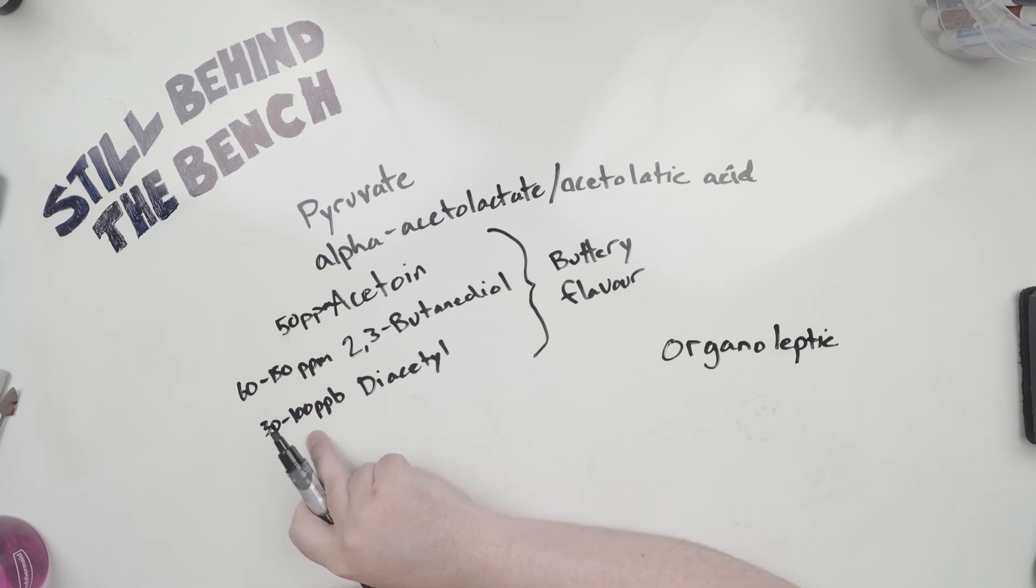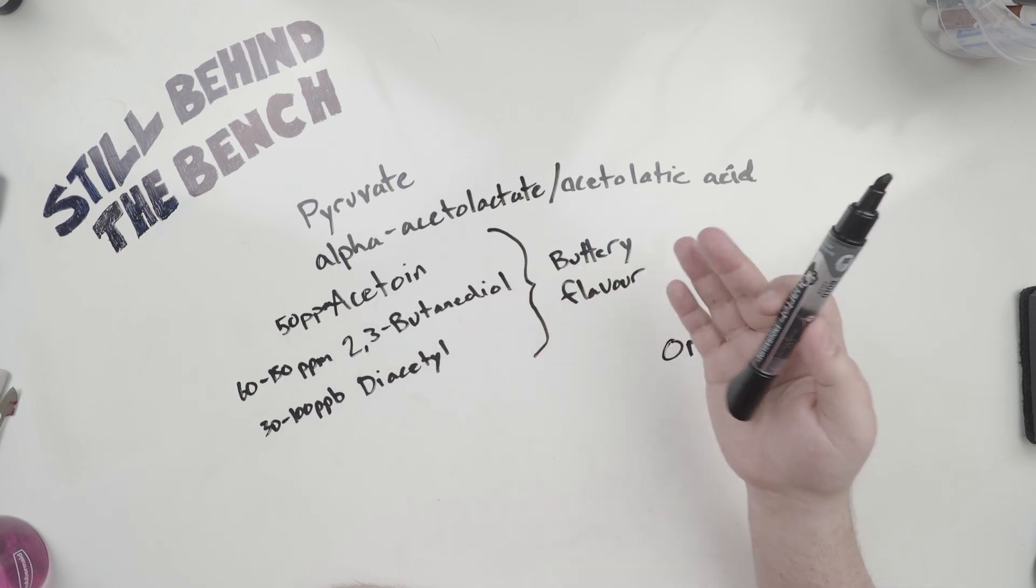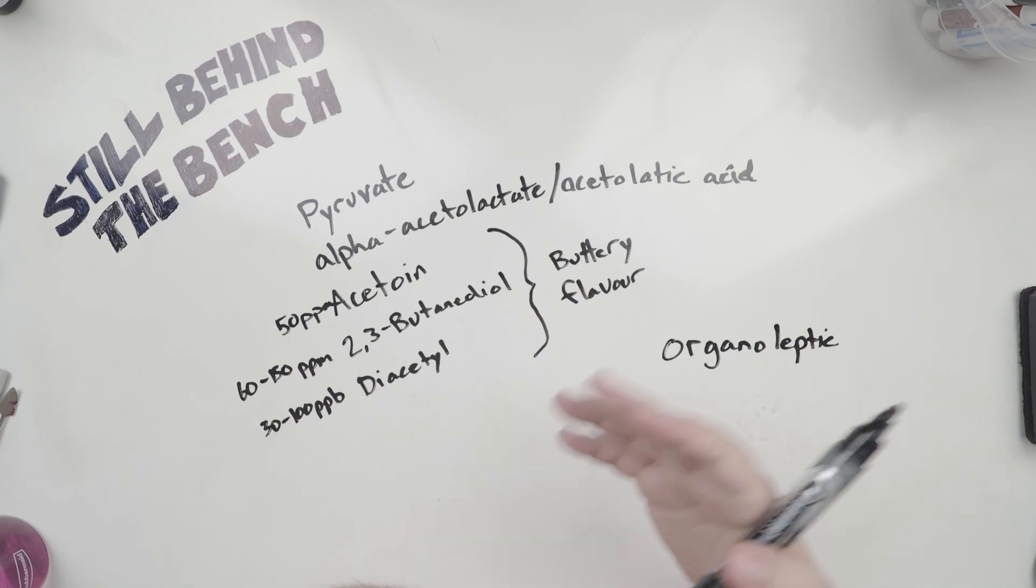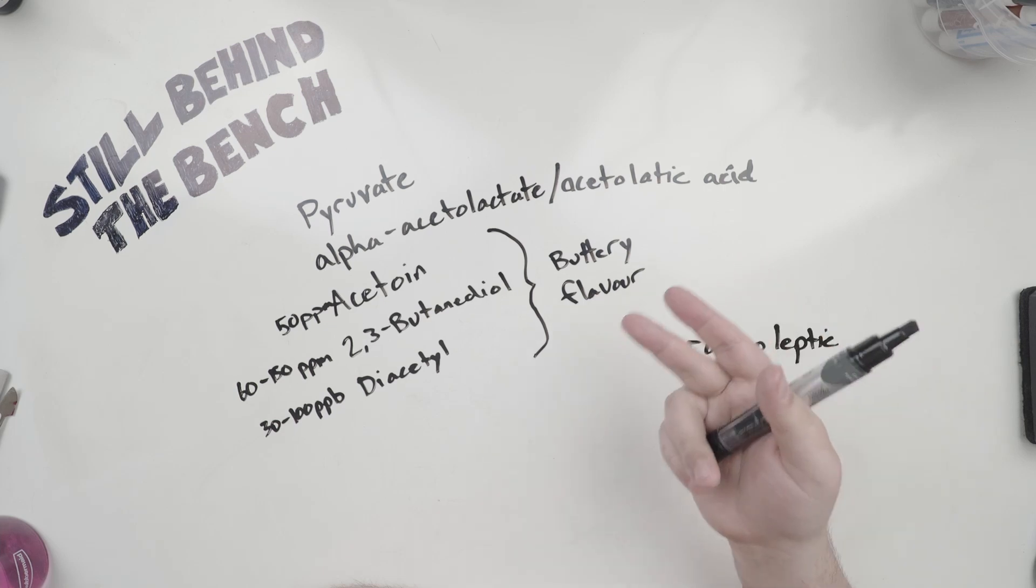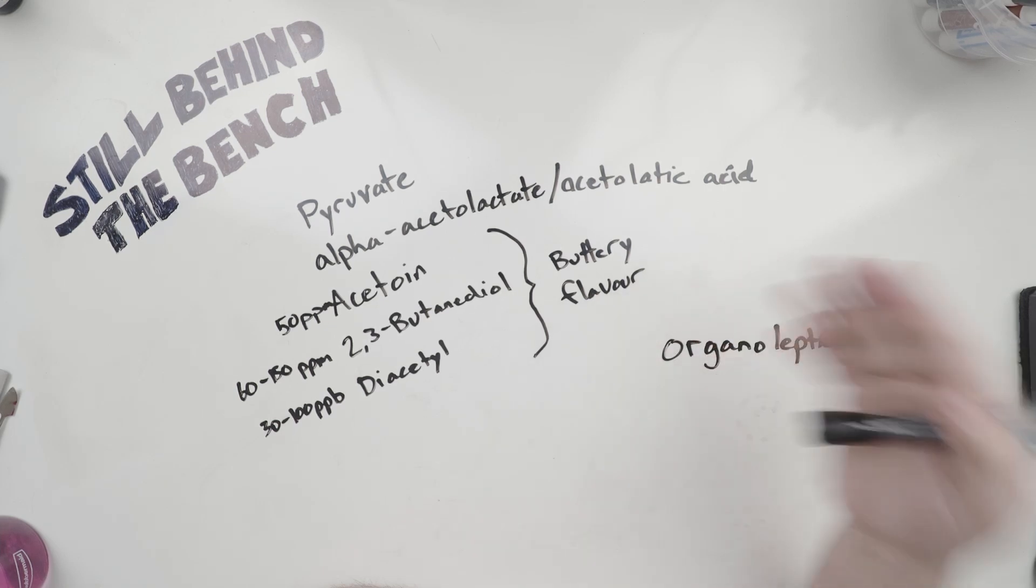So depending on what else is present, diacetyl's flavor threshold can be as low as 30 parts per billion, so that'd be 30 micrograms per liter. Although when you put it in an alcohol, that threshold usually goes up to around 100 parts per billion, so 100 micrograms per liter, that's an exceptionally small amount. Whereas acetoin is 50 parts per million, so that'd be 50 milligrams per liter needs to be present. And then 2,3-butanediol is between 60 and 150 parts per million. So this diacetyl is 500 times more detectable than acetoin or butanediol. It makes up a big part of what's called the organoleptic profile of your beverage. And if you've never heard the term organoleptic before, that just means using your senses to analyze.